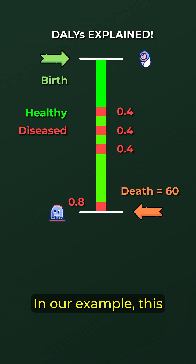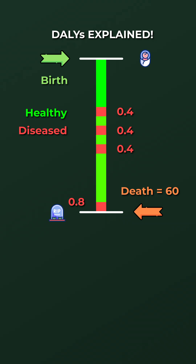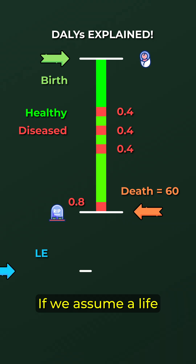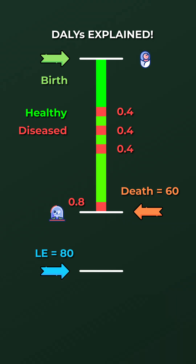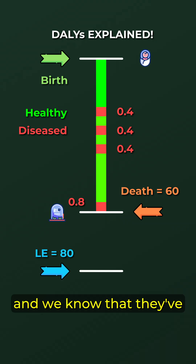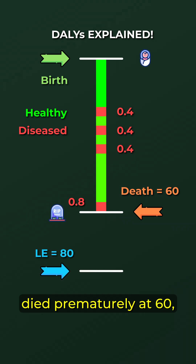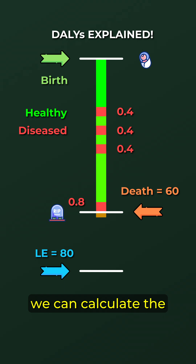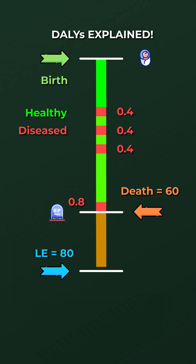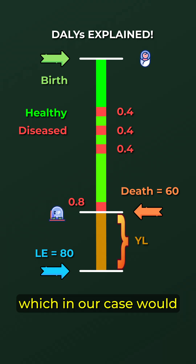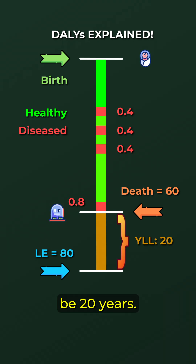In our example, this disease has caused them to die prematurely. If we assume a life expectancy of 80 years and we know that they've died prematurely at 60, we can calculate the years of life lost, which in our case would be 20 years.